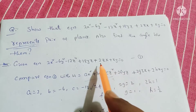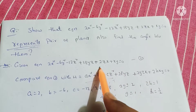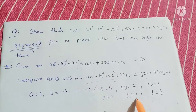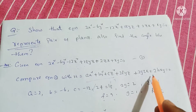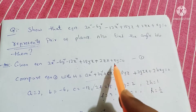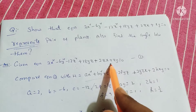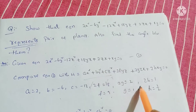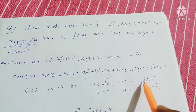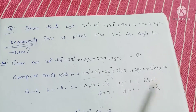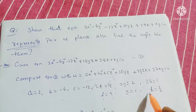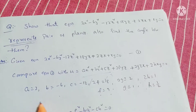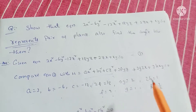From 2g equals 2, g equals 1. And h equals 1 by 2. So we have all the values: a, b, c, f, g, h.